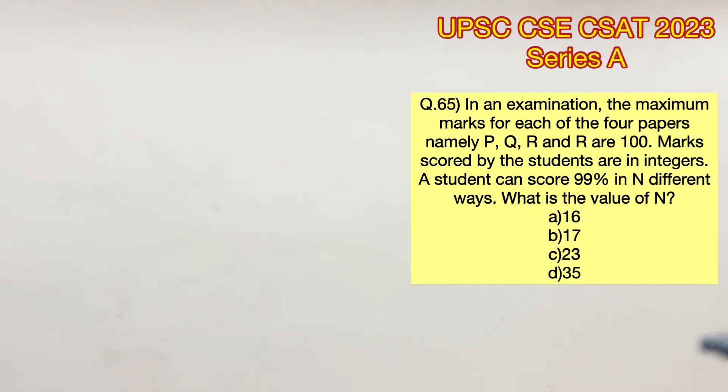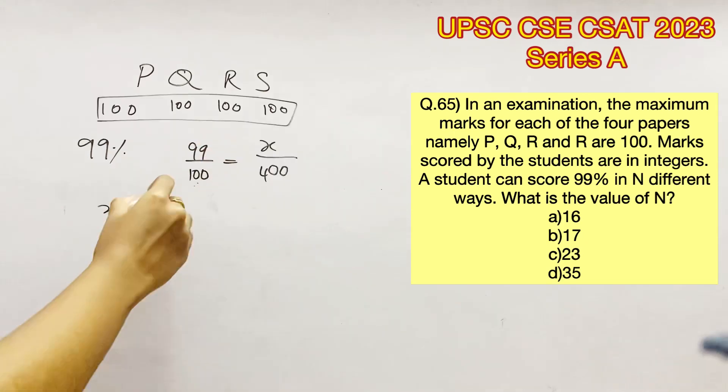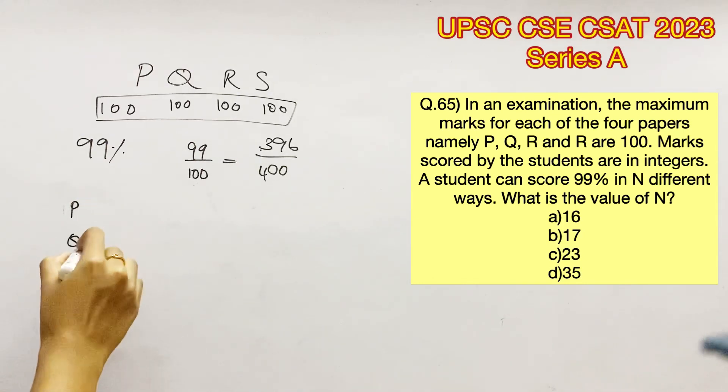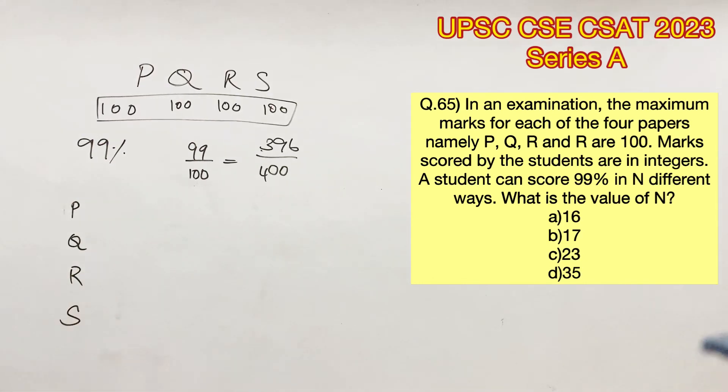In an examination, the maximum marks for each of the four papers, namely P, Q, R and S, are 100. We are supposed to find in how many ways a student can score 99%. We know that the total marks is 400 because each paper is of 100 marks. So 99% of 400 would be 396, which means that student has lost a total of four marks out of the four papers.